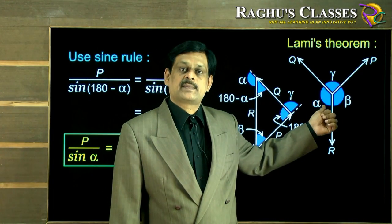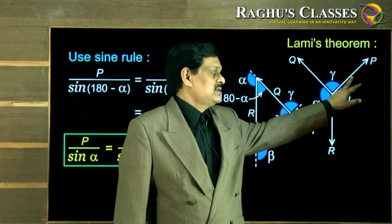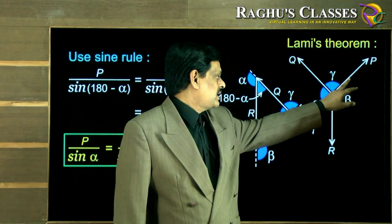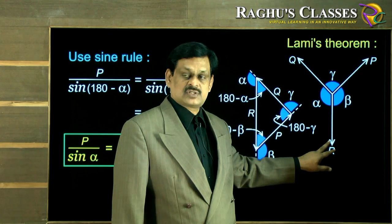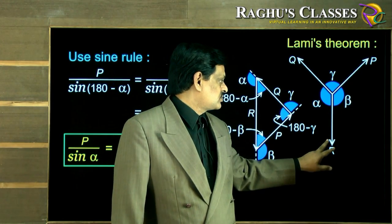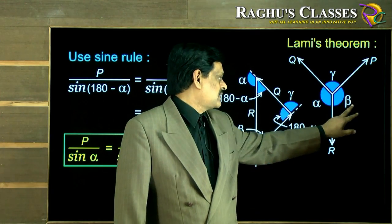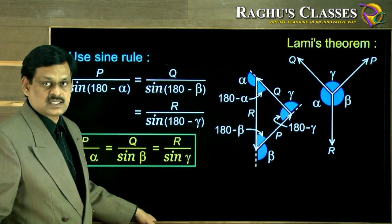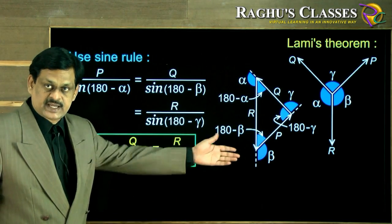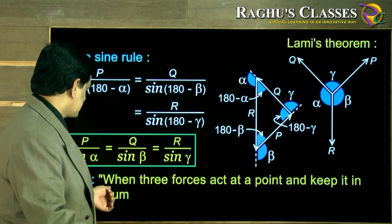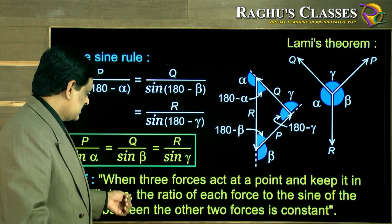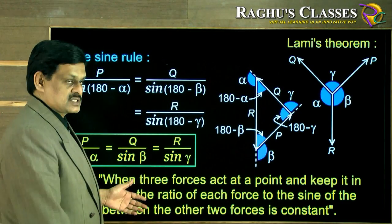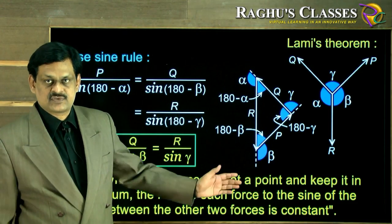Comparing this to the original diagram: when three forces act at a particle and keep it in equilibrium, each force divided by the sine of the angle between the other two forces is constant. This is Lami's theorem, and it is a consequence of the law of triangle of forces.